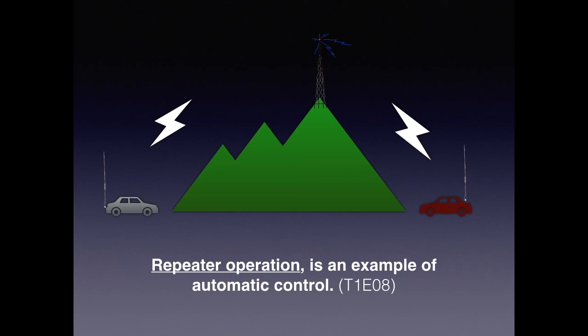Automatic control is an engineering term covering mechanisms of operation that do not require human intervention. A repeater falls into that category — it runs autonomously, nobody has to sit over it, it just works automatically. Repeater operation is an example of automatic control.